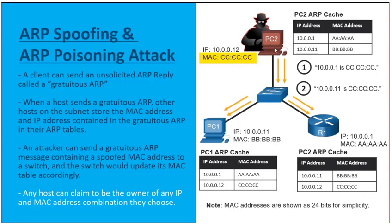The threat actor PC2 also sends out a gratuitous ARP claiming that 100.1.1, which is the IP address of PC1, is reachable with MAC address all-C's, which is again the attacker. So when PC1 sends data to the 100.1 IP address, it'll be sending it at layer 2 to the attacker, which is all-C's.